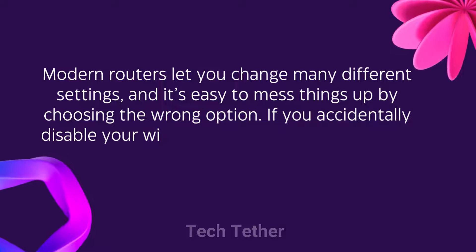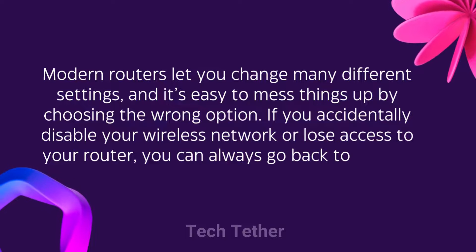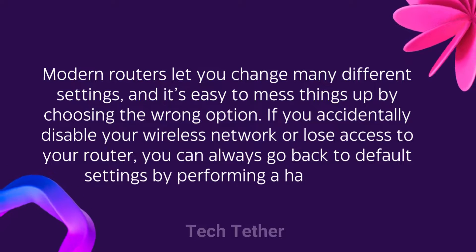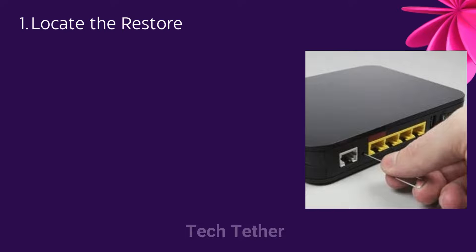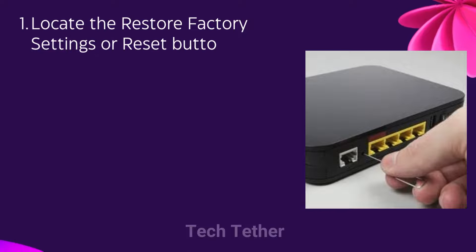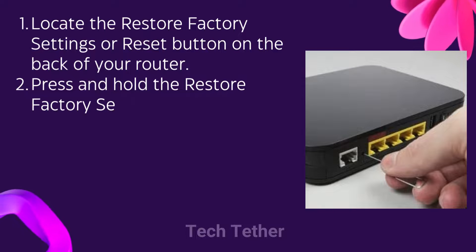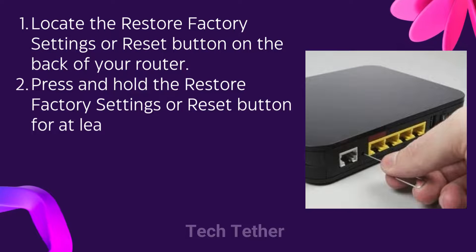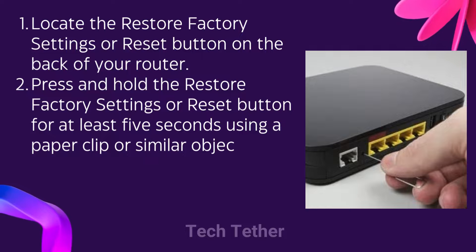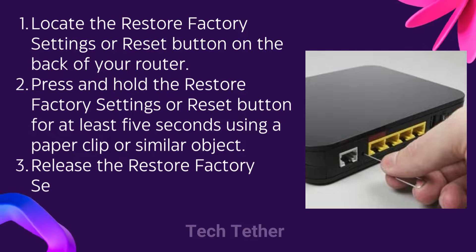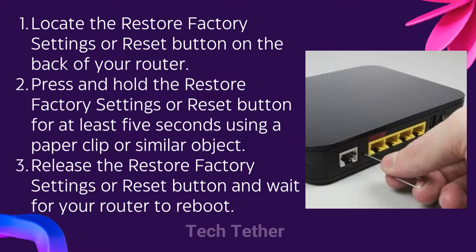If you accidentally disable your wireless network or lose access to your router, you can always go back to default settings by performing a hard reset. Locate the Restore Factory Settings or Reset button on the back of your router. Press and hold it for at least 5 seconds using a paper clip or similar object, then release the button and wait for your router to reboot.